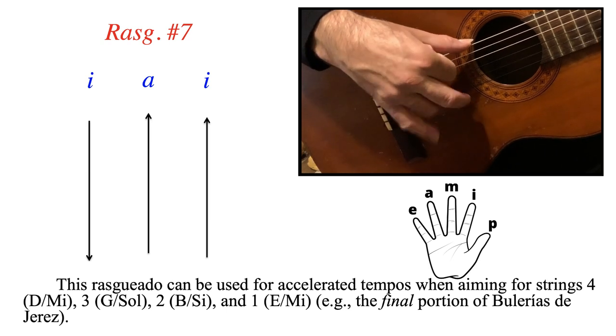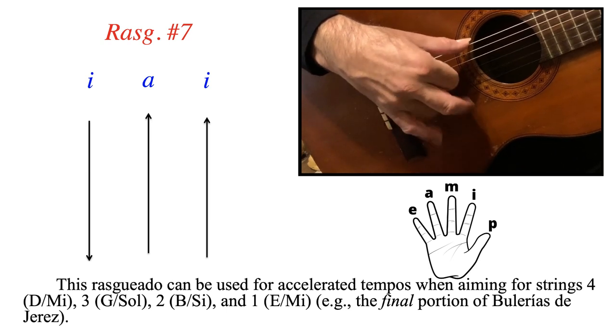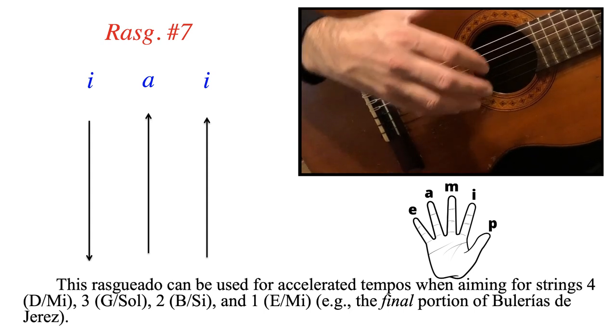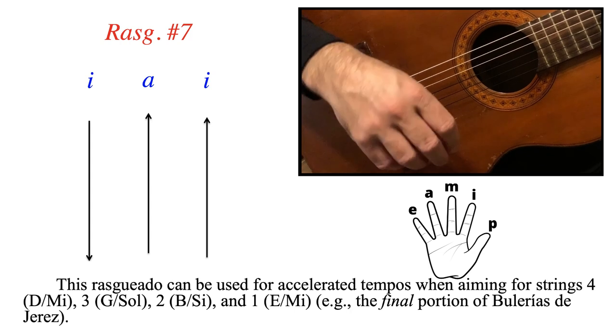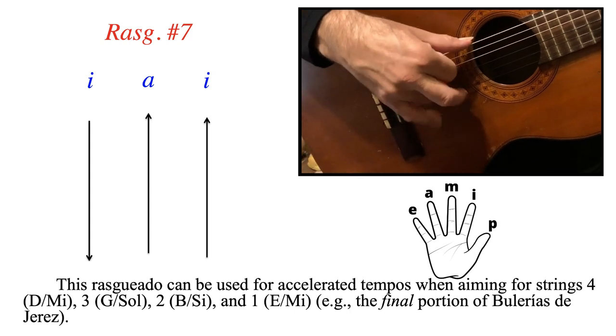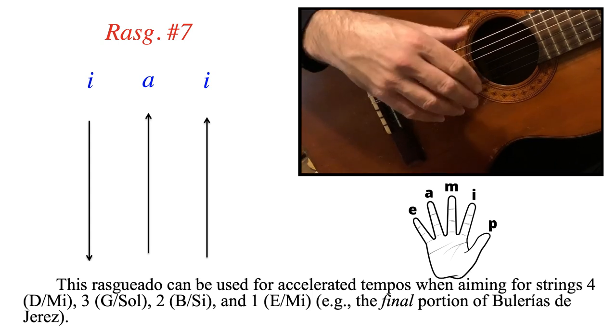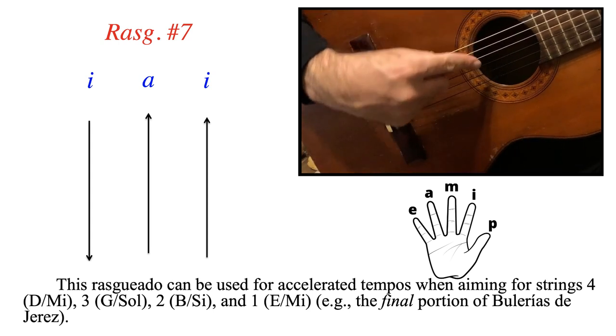And you need a nice, crisp, light rasqueado that's not too intrusive, not too big, not too thumpy like the ones that involve the thumb. And you can use this in Bulerias also for a nice, crisp sound along the treble strings.